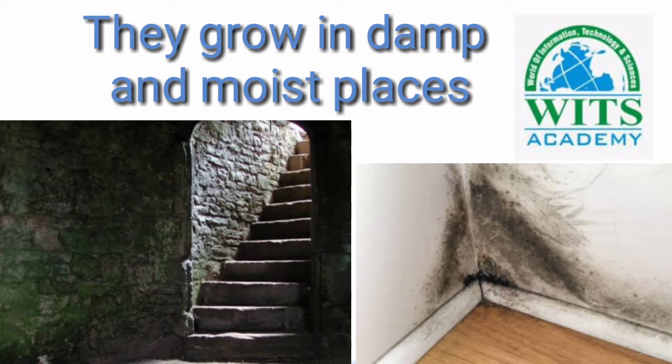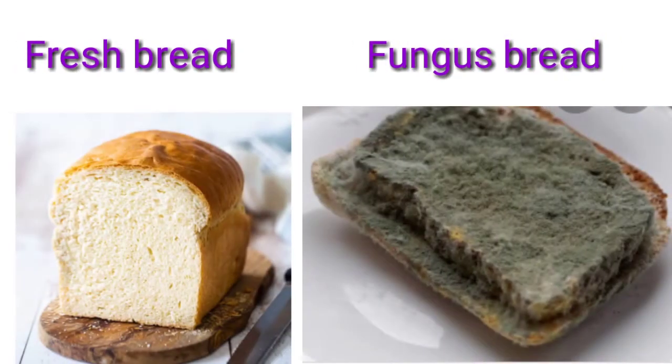You must have seen in your own homes, or in someone else's home, how fungi grows in corners where there is dampness — green color appears there, meaning fungus starts to grow in those moist corners.